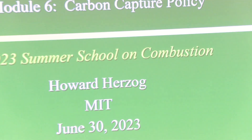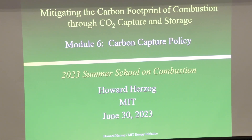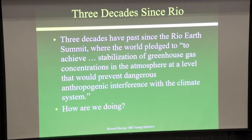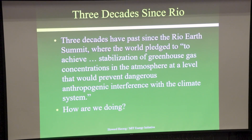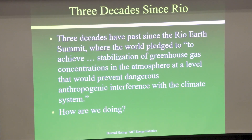We'll talk a little about policy — actually it's a little more than just policy; it's trying to put where we are in perspective. I started out the first day talking about the climate treaty, the Rio Convention, the Earth Summit back in 1992. At the Earth Summit, the objective was to achieve stabilization of greenhouse gas concentrations in the atmosphere at a level that would prevent dangerous anthropogenic interference with the climate system. That's since been translated into trying to keep it to 1.5°C temperature rise, definitely under 2°C.